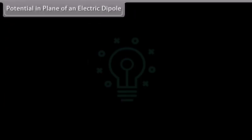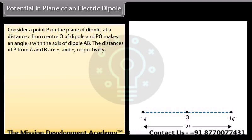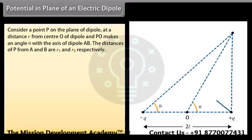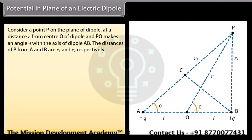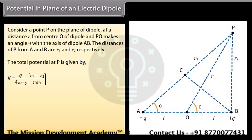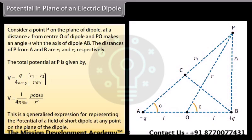Potential in the plane of an electric dipole: Consider a point P on the plane of the dipole at distance R from center O, where PO makes angle θ with the axis AB. The total potential at P is V = (1/4πε₀) × P cosθ/R². This is a generalized expression representing the potential of the field of a short dipole at any point on the plane of the dipole.